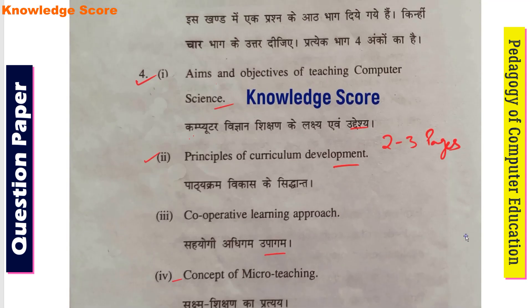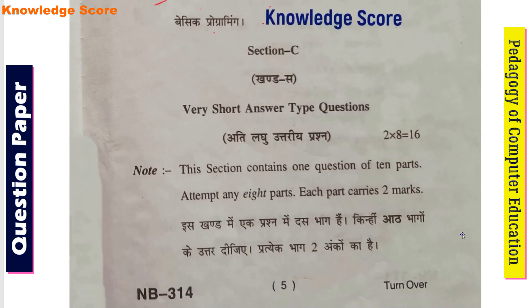Now we will discuss Section C — very short answer type questions. This section contains 1 question of 10 parts. Attempt any 8 parts. Each part carries 2 marks, so Section C is 16 marks in total.